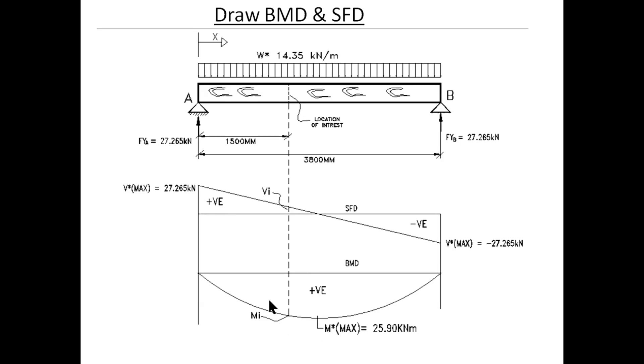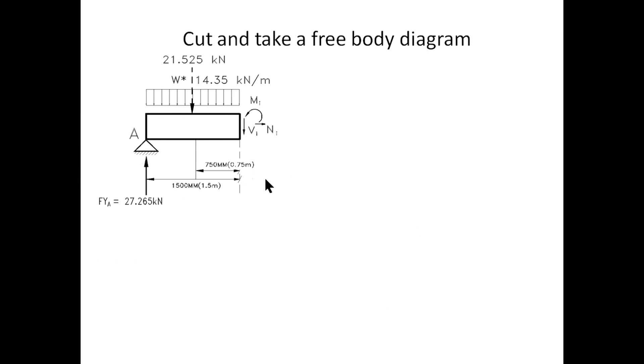VI and MI are the internal forces that we want to work out at 1500 millimeters from support A. So then we can in the fourth step is basically do a cut and we will take a free body diagram around the area that we want to determine the internal stresses. In this case which is 1500 millimeters.